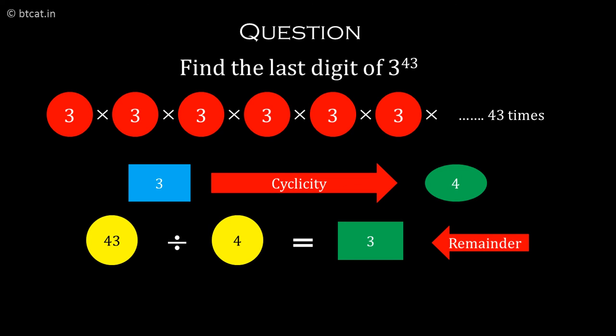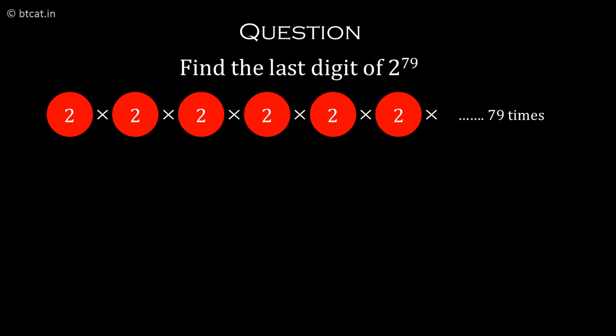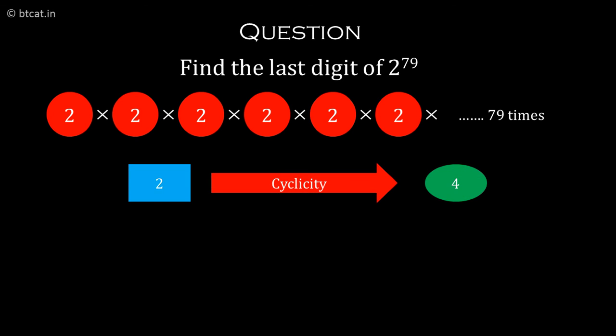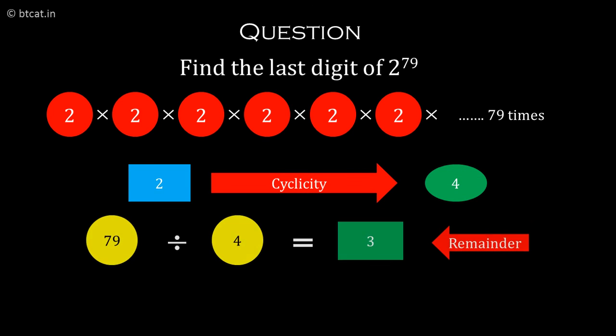Therefore 3 cubed is 27, so the last digit is 7. Coming back to our original question, 2 raised to 79: divide 79 by 4, remainder is 3, so it becomes 2 cubed which is 8. This method works for any number raised to any power.